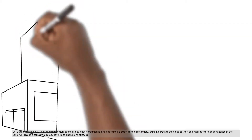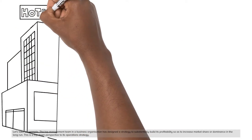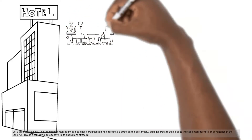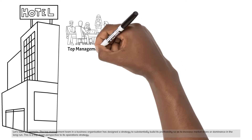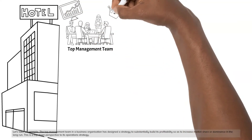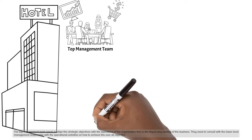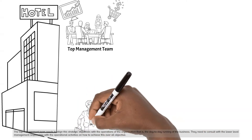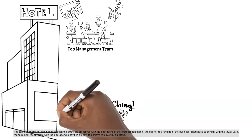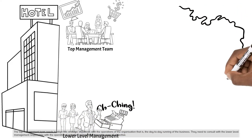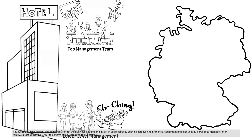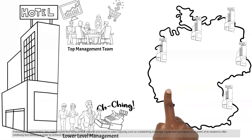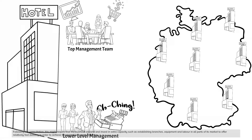Let's take an example. The top management team in a business organization has designed a strategy to substantially build its profitability so as to increase market share or dominance in the long run. This is a top-down perspective to its operations strategy. The top management team needs to align the strategic objectives with the operations of the organization — that is, the day-to-day running of the business. They need to consult with the lower-level management responsible for the operational activities on how to achieve this overall objective. Following the consultation, this might require that the business expand and invest in extra capacity, such as establishing branches, equipment, and labor in all parts of its market to offer relatively fast delivery.